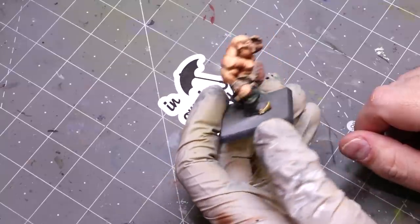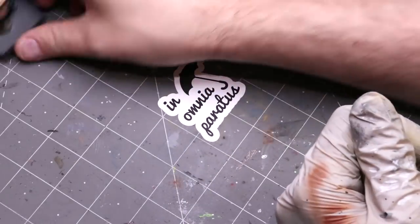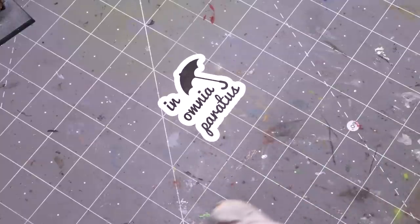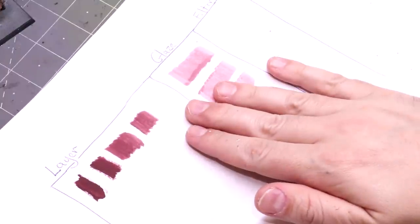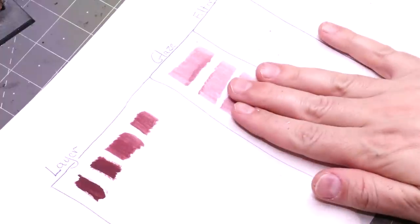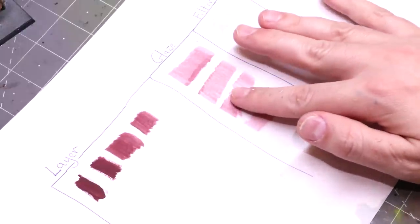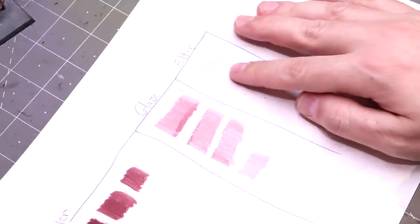So to summarize, layers represent a larger spectrum of how you're going to use your paint. Glazes represent this thin area where you can still see the color, it's still going to be present, but it's going to interact a lot with the undershade.